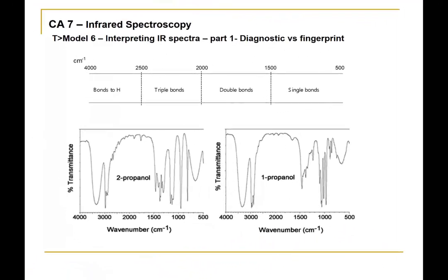Here are two actual spectra for two alcohol-type molecules. At the top of the diagram are the typical regions for single bonds, double bonds, triple bonds, and bonds to hydrogen. The main point is to distinguish between the diagnostic versus the fingerprint region of a spectrum. The diagnostic region — generally from 1,500 wave numbers onwards — tells us what functional groups are present. For these two spectra, the diagnostic region is quite similar, as expected, since both involve alcohol molecules.